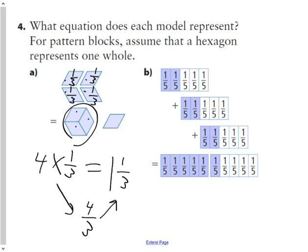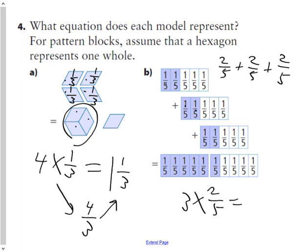Question four B: two-fifths plus two-fifths plus two-fifths. Written numerically instead of pictorially, that's three groups of two-fifths. If I ask myself how many fifths I have in total, I'd have one, two, three, four, five, six — six-fifths, which equals one and one-fifth.